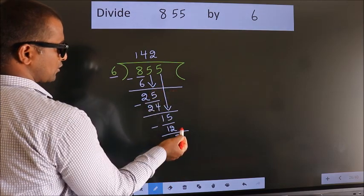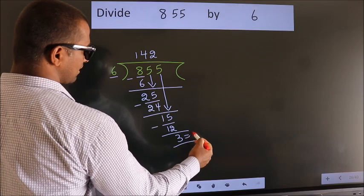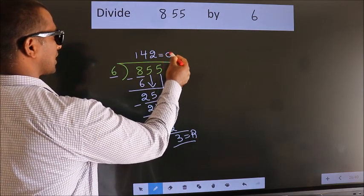No more numbers to bring down. So we stop here. This is our remainder. This is our quotient.